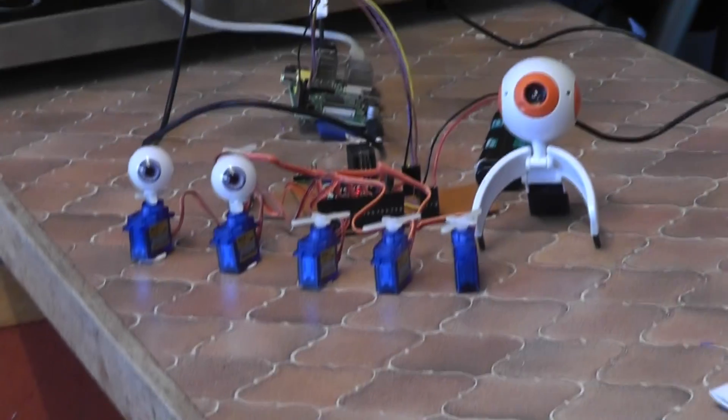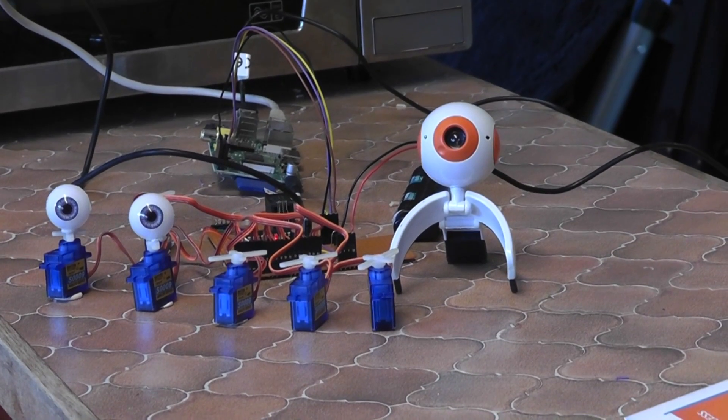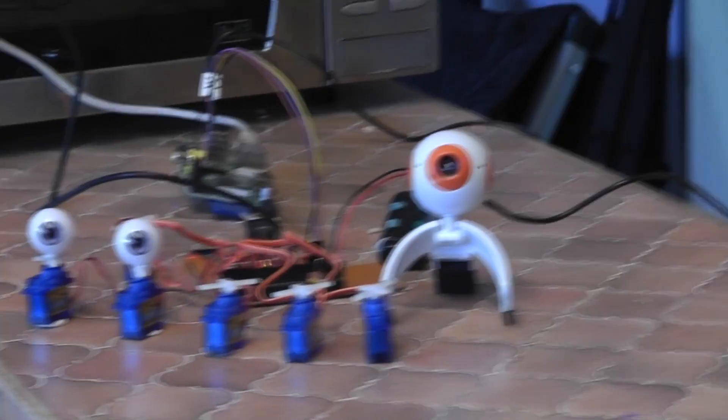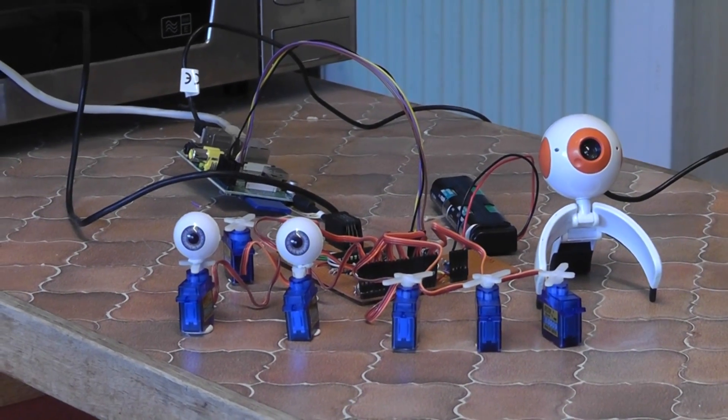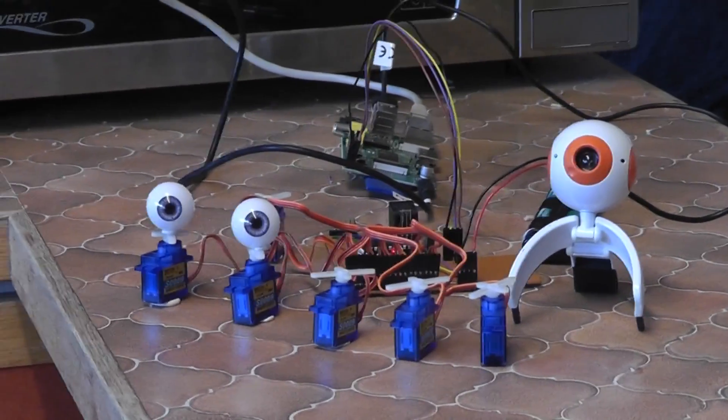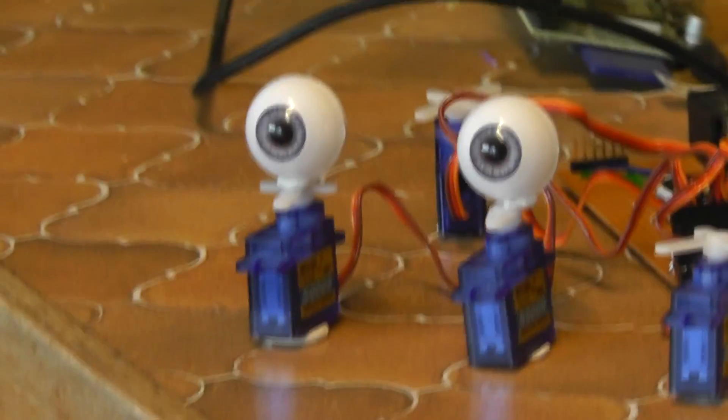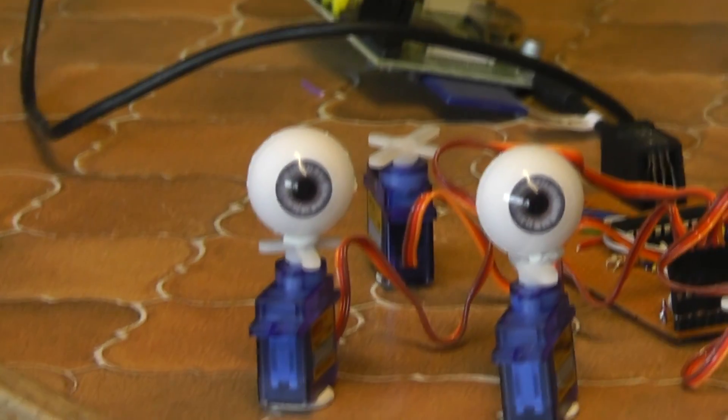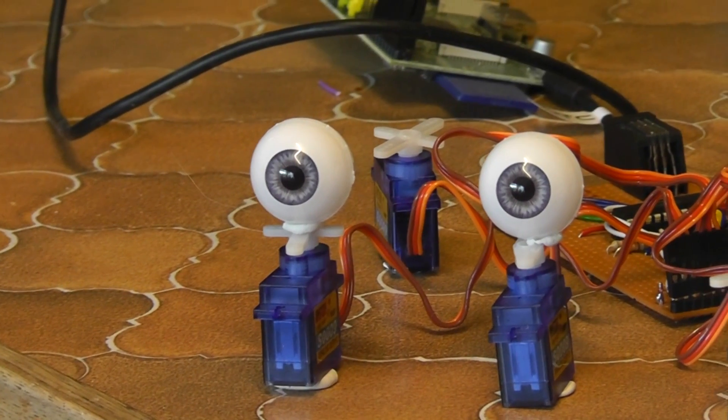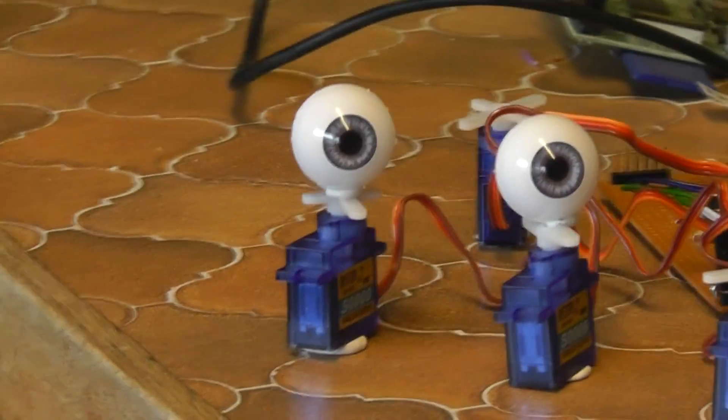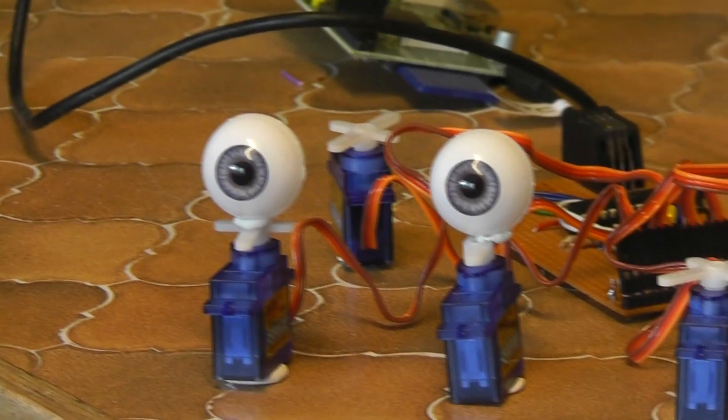So as I move around, the Raspberry Pi will detect my face and the eyes will rotate to follow my movements. As you can see, the camera's tracking the position of my face and as I move around it positions the eyes so that they continue to look at me.